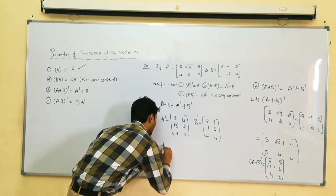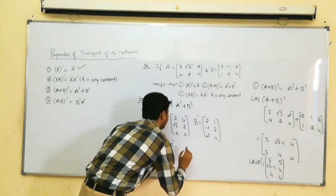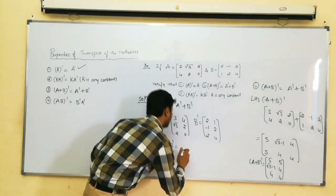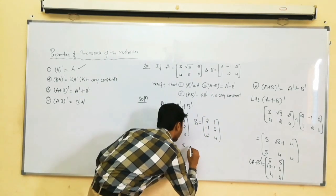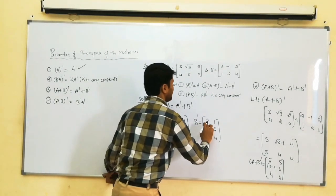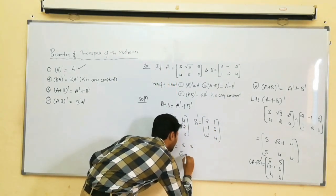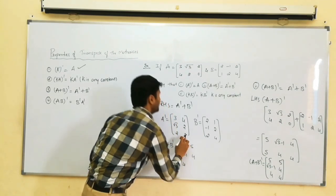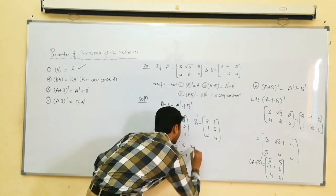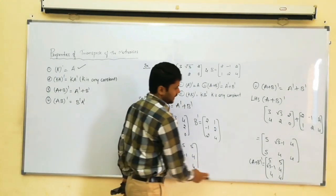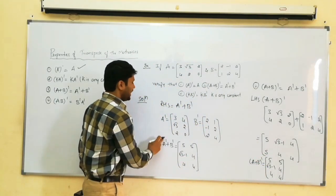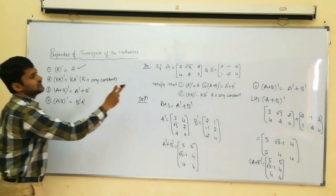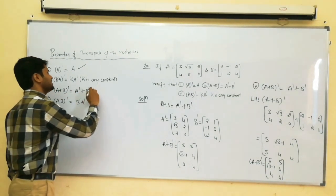Matrix addition is possible since both A dash and B dash have order 3 by 2. Adding: 3 plus 2 = 5; 4 plus 1 = 5; root 3 plus minus 1 = root 3 minus 1; 2 plus 2 = 4; 2 plus 2 = 4; 0 plus 4 = 4. The A plus B whole transpose answer and the A dash plus B dash answer are the same. Therefore, the third property is also verified correct.